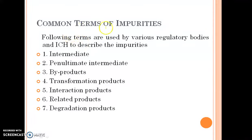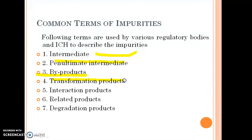According to ICH guidelines, some common terms have been given related to impurities: intermediate, penultimate intermediate, byproducts, transformation products, interaction products, related products, and degradation products.